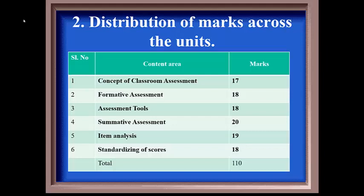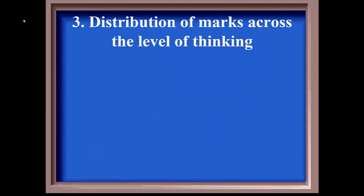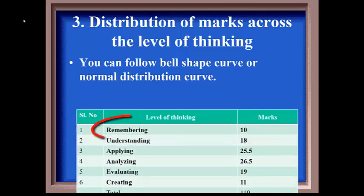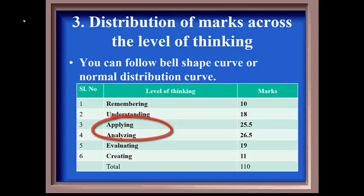After distribution of marks or questions across the units, we have to distribute marks across the level of thinking. We will follow bell shape curve or normal distribution curve, where more marks are distributed to middle order thinking, applying and analyzing. Less marks are distributed to high order thinking and low order thinking in order to have bell shape curve. You all know what is bell shaped curve. This is bell shaped curve, same like our bell.